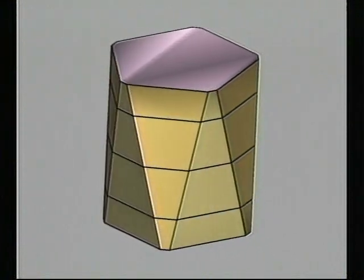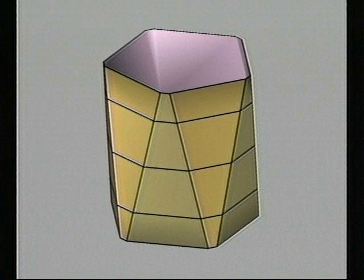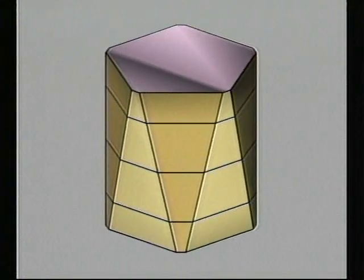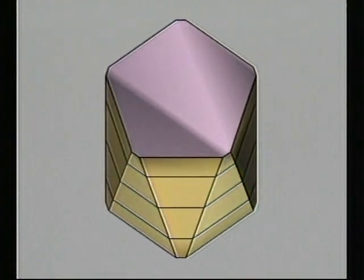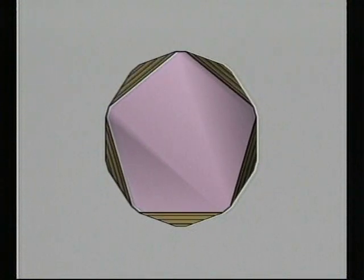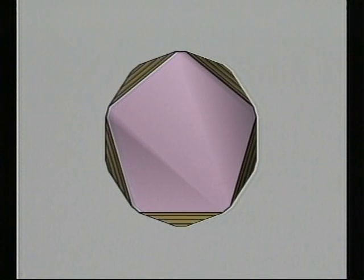This tilting shrinks alternate edges of the top pink face and the opposite ones of the bottom pink face. And now, when we look straight down, we can see the zigzag edges bounding the yellow faces.